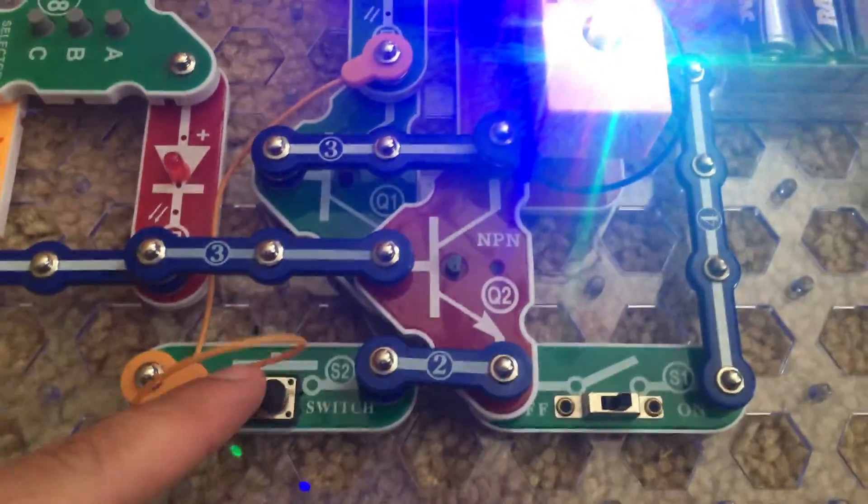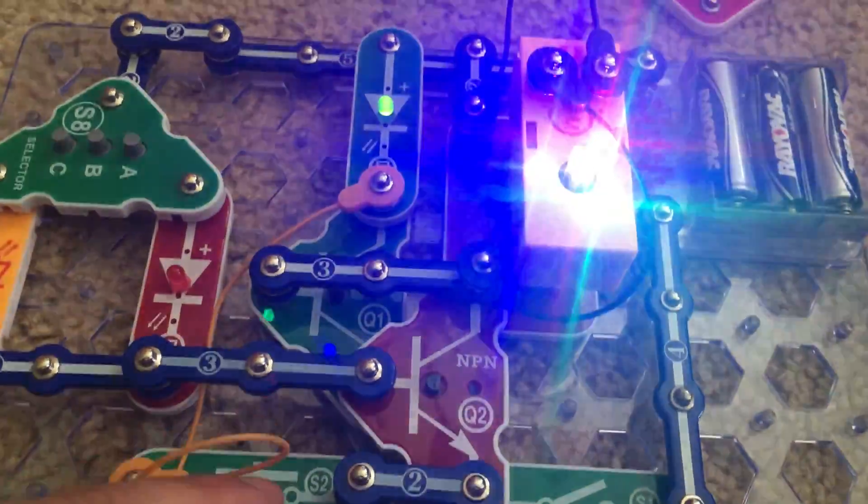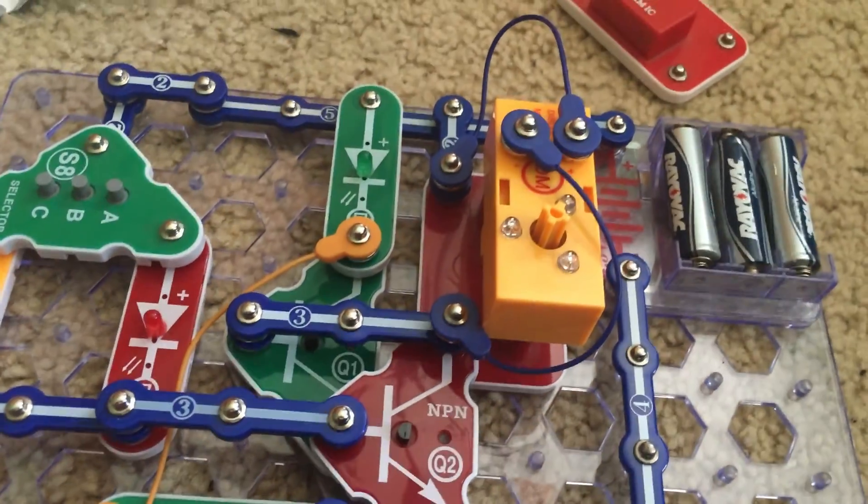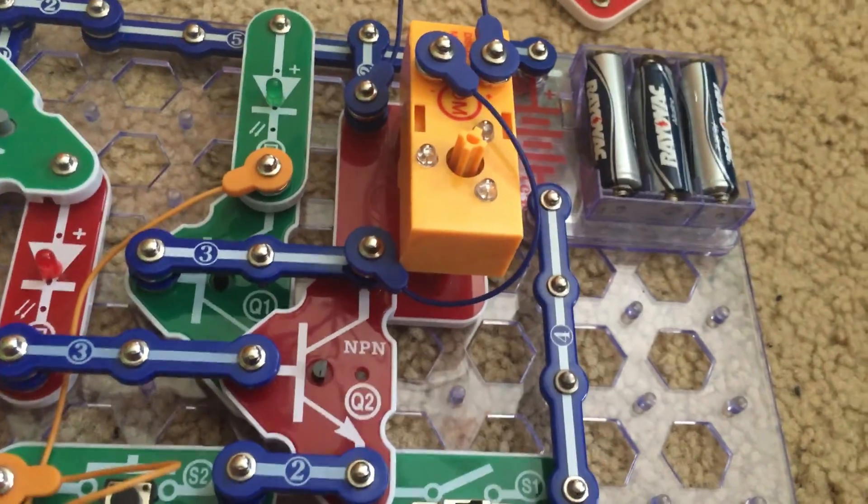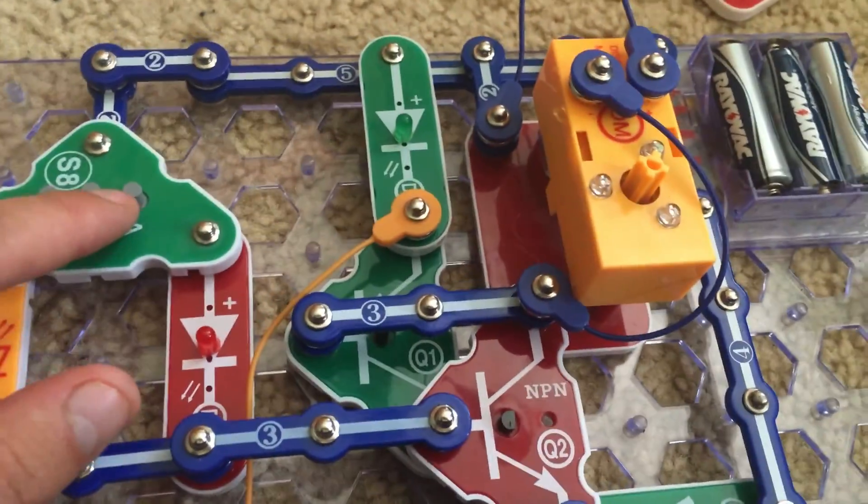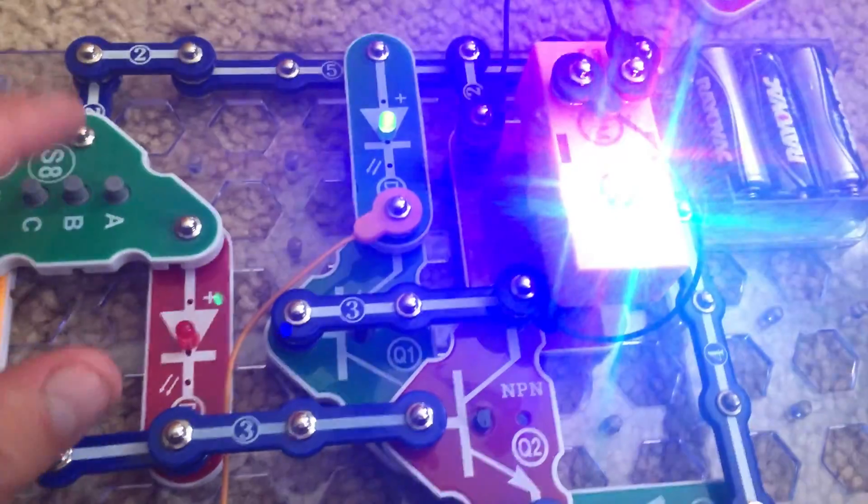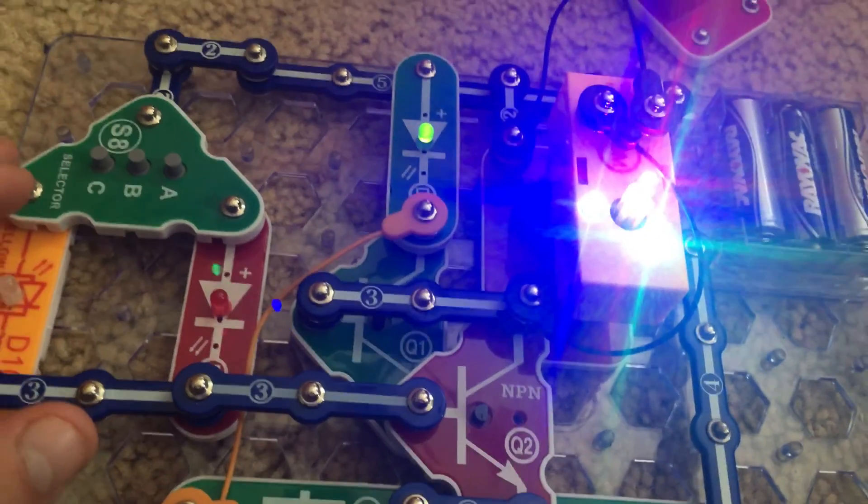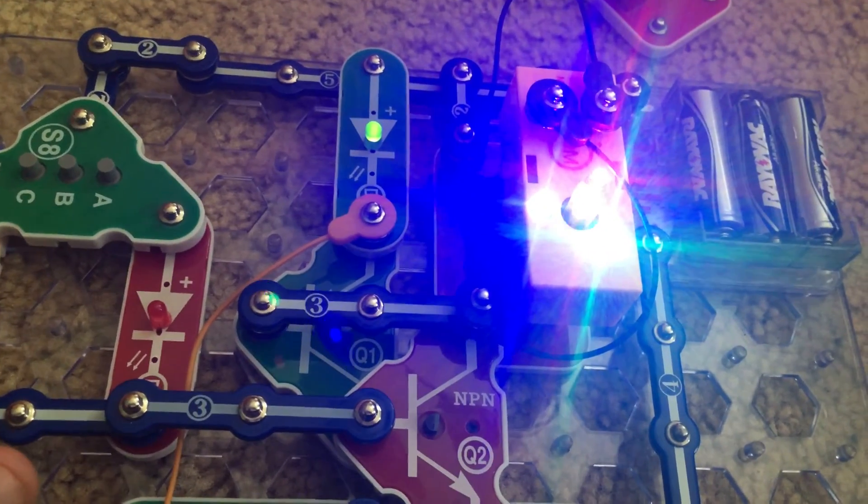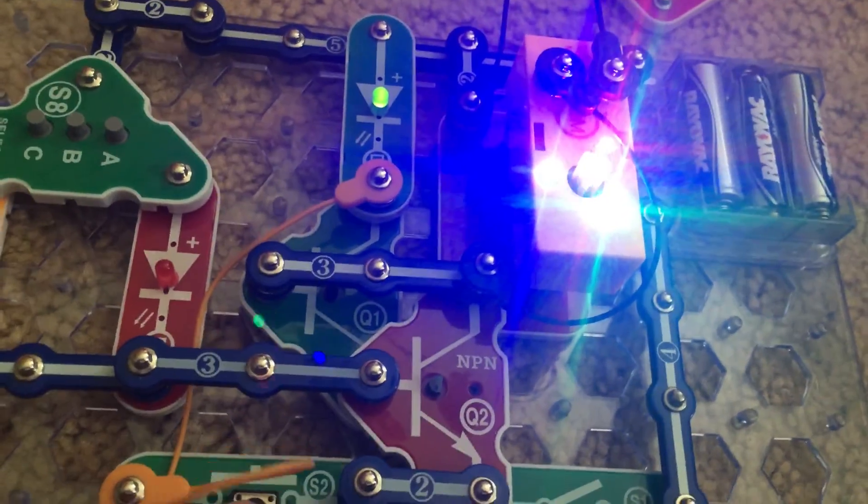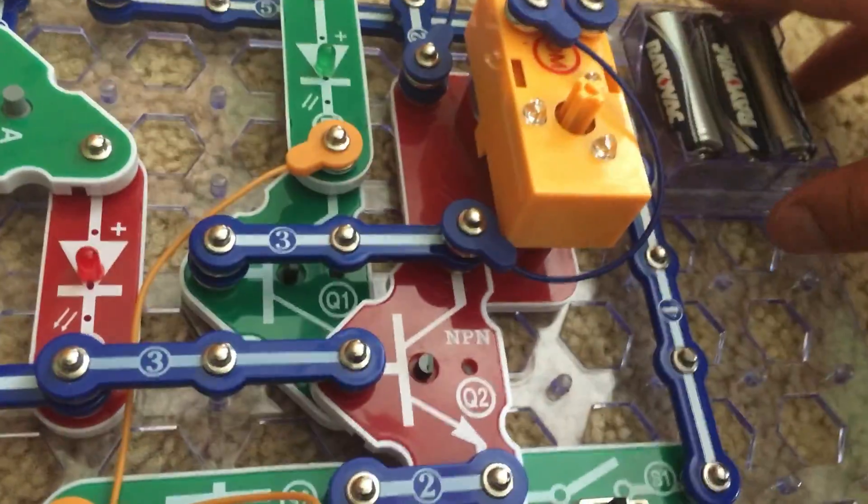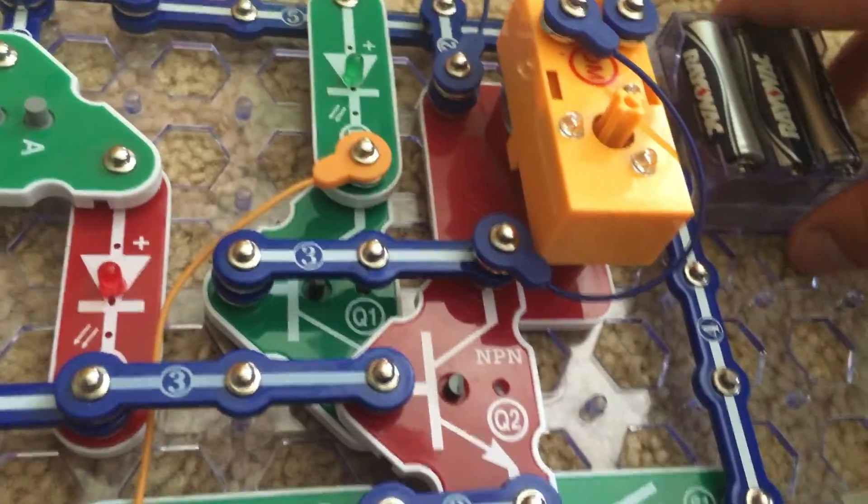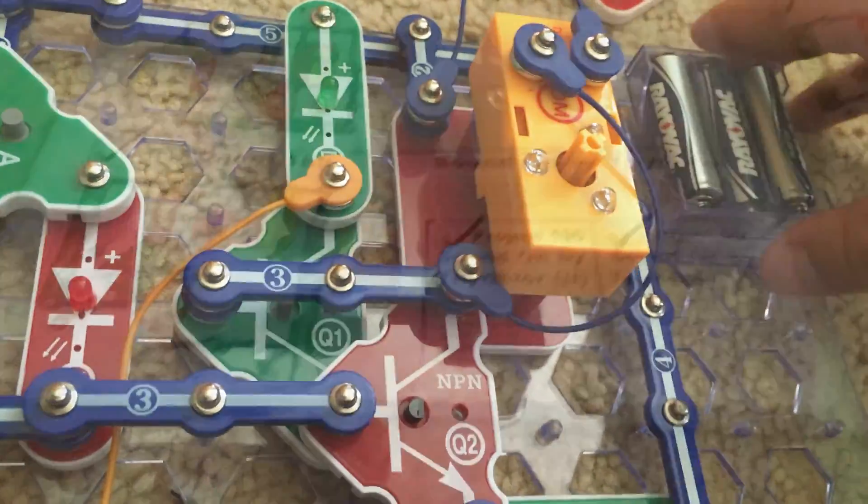But what does S2 do? Well let's find out. It turns off the circuit when you hold it down for a second. Then you can start the circuit up again by pushing one of the selector module buttons. Turn it off. Now the green LED also lights up when the S2 switch is pushed.